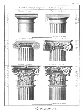Parapet: a low wall built up above the level of a roof, to hide the roof or to provide protection against falling, and similar structures associated with balconies, bridges, etc.